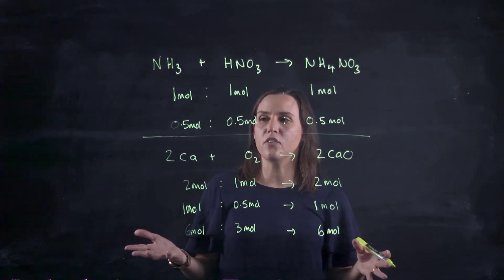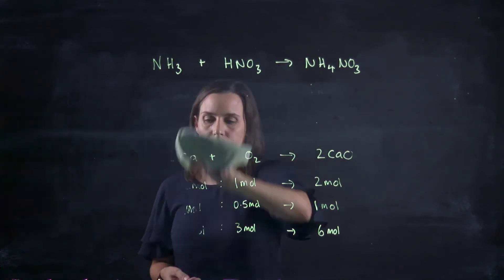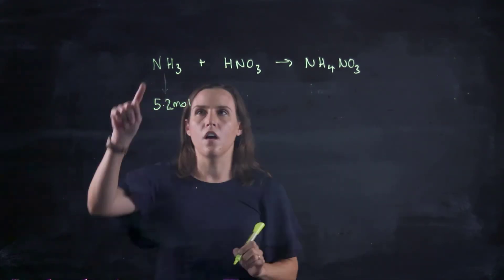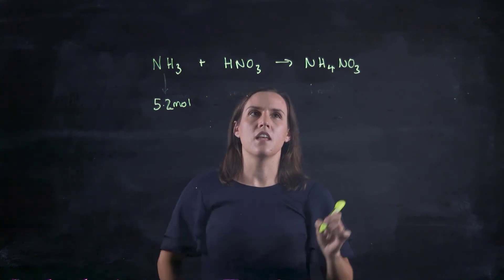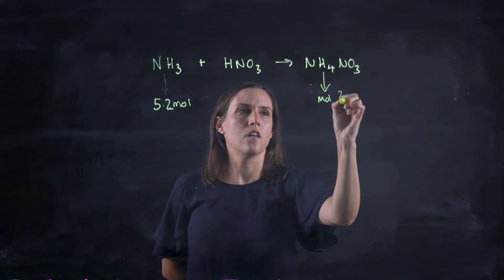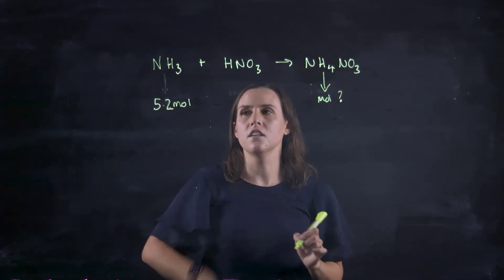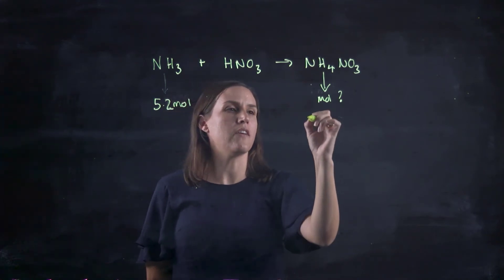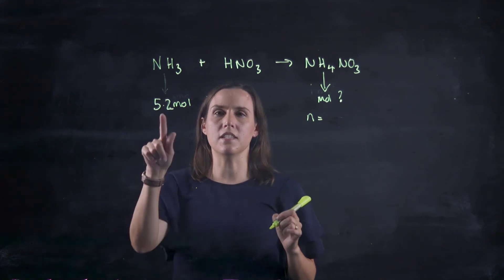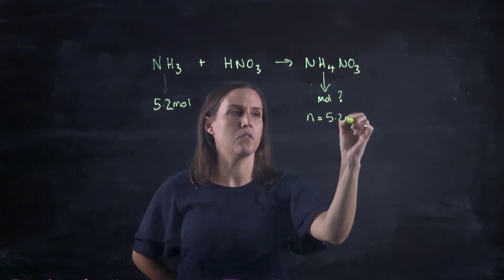Now, let's have a look at an example of how we can do one of these calculations. If I had 5.2 mole of NH3, how many mole of product would I achieve? So the relationship's one to one. So my mole of NH4NO3 would be the same because they're one to one relationship. So it'd be 5.2 mole.